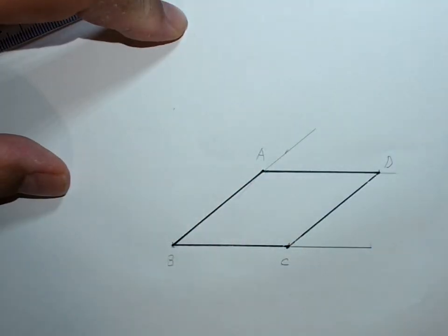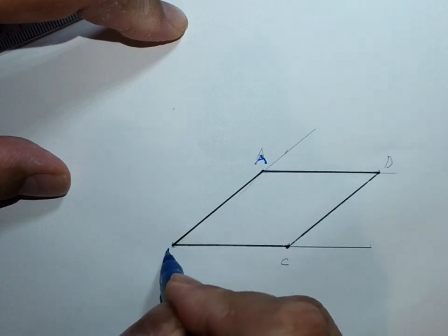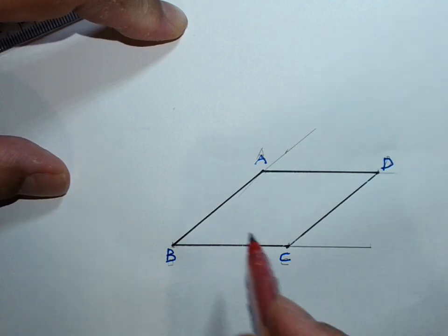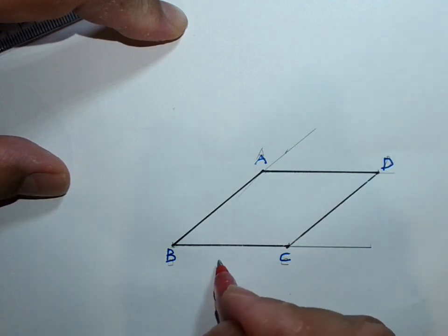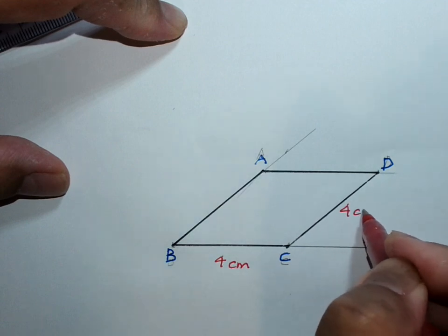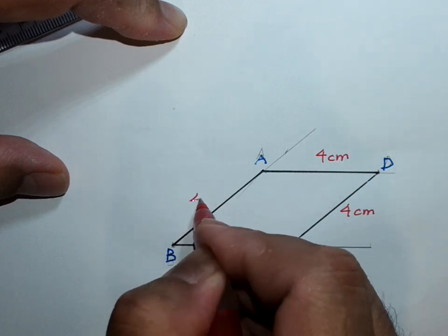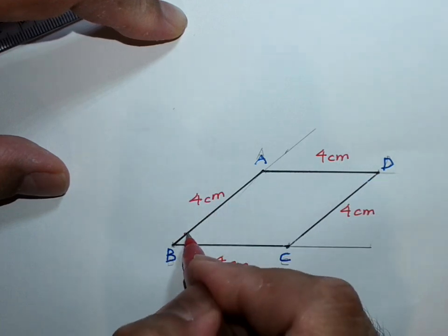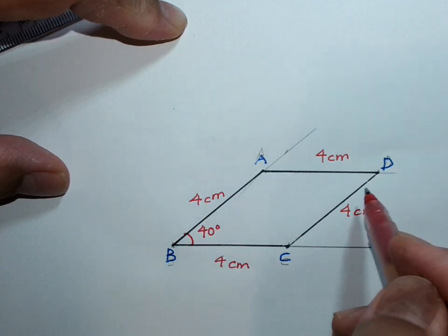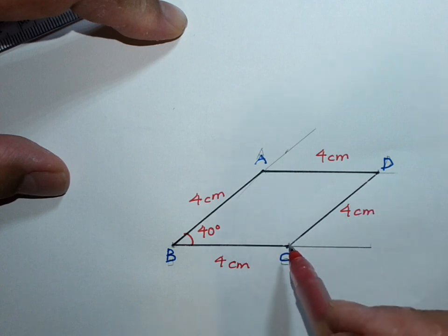Alright, A, B, C, D. Where this rhombus, all sides are equal. 4 cm, 4 cm, 4 cm, 4 cm, 4 cm, 4 cm. You might want to find out how many degrees this is and these two are.